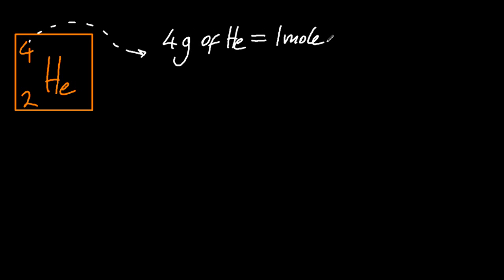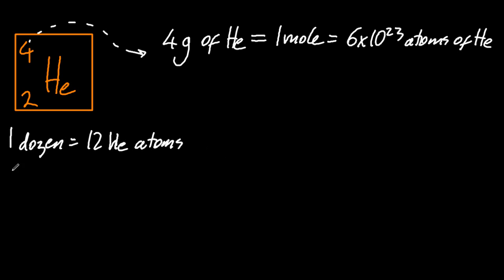So 4 grams of helium is 1 mole. And 1 mole is always 6 times 10 to the 23. Just like a dozen is always 12, a pair is always 2, and a gross is always 144, a mole is always 6 times 10 to the 23. It's just a number.